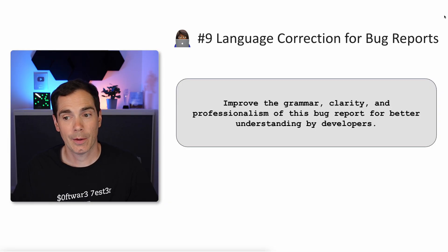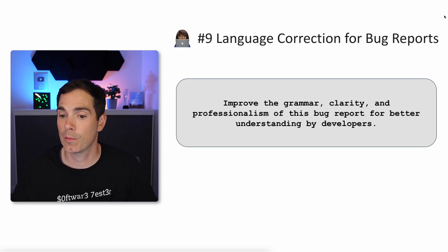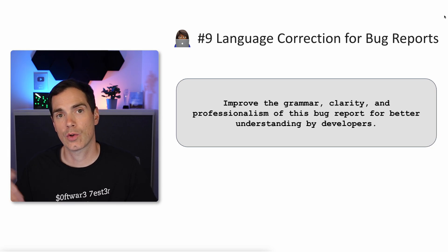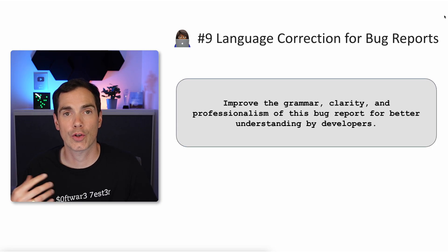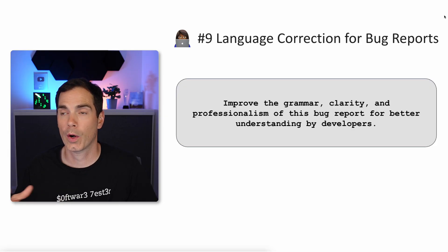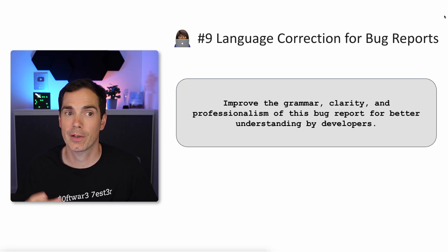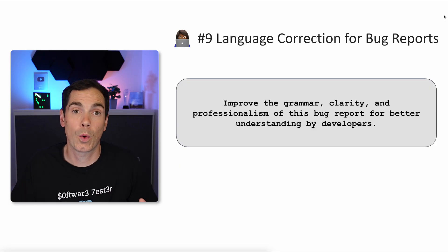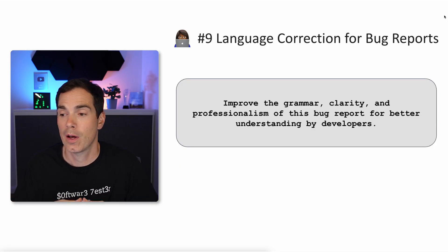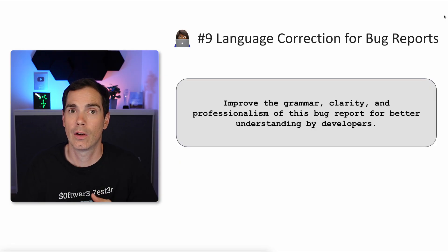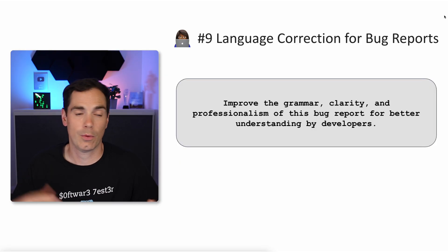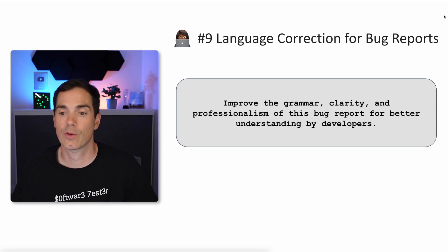Prompt nine: language correction for bug reports. Improve the grammar, clarity, and professionalism of this bug report for better understanding by developers. You can also give the tone of voice to the LLM, provide text examples of how a bug report should be written, especially when working with different stakeholders or developers from different backgrounds. Even if you work in a distributed environment with developers in other countries, you can translate the report into French, Spanish, or whatever language helps them understand better.